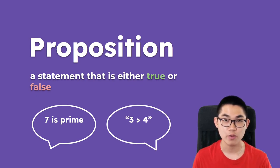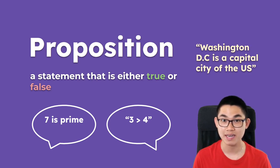How about 3 is larger than 4? Well, this is also a statement, but it's false, so it is a proposition. And a proposition can also be something like Washington, D.C. is the capital city of the U.S., it is a true statement, and therefore is a proposition.